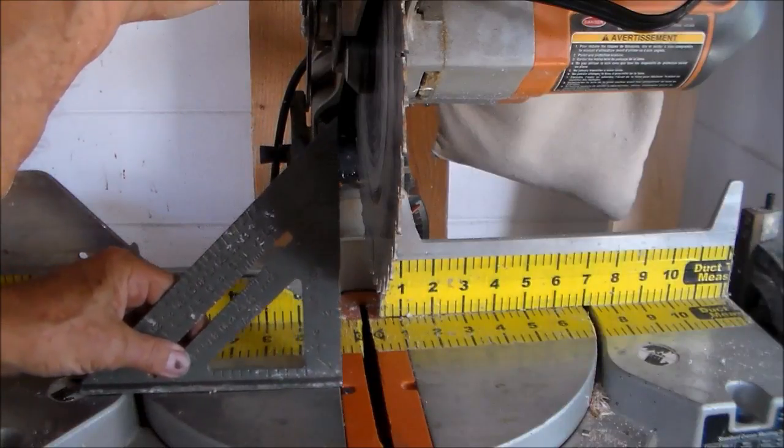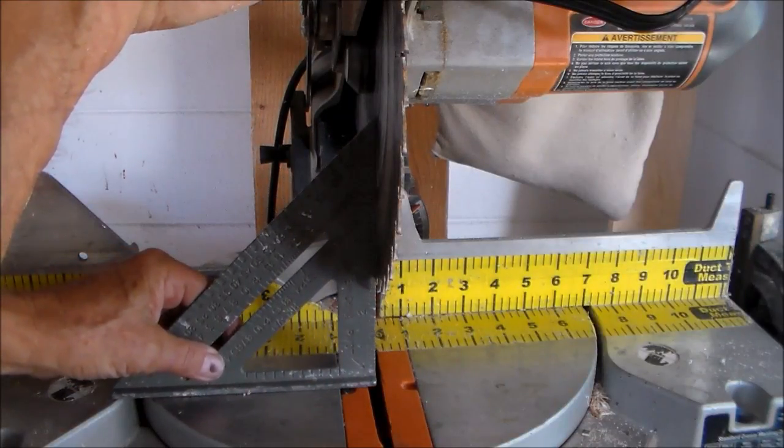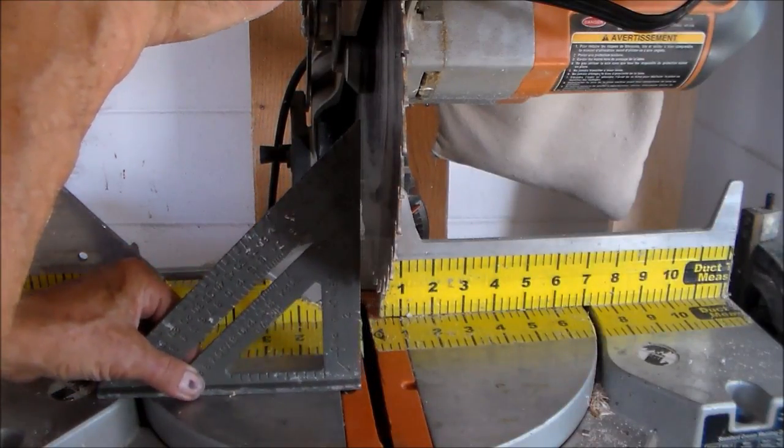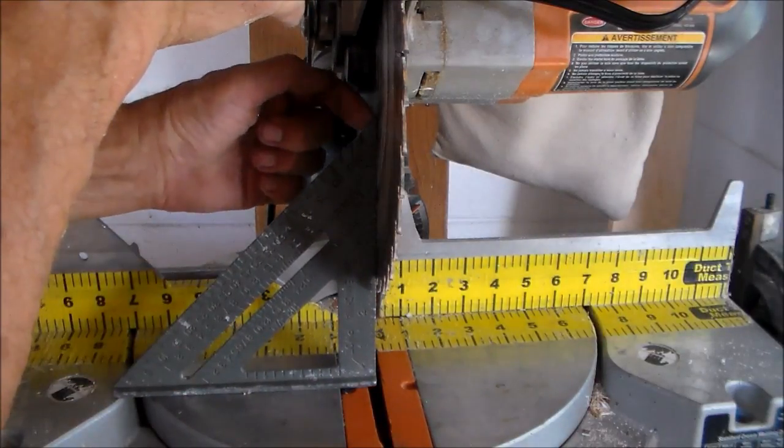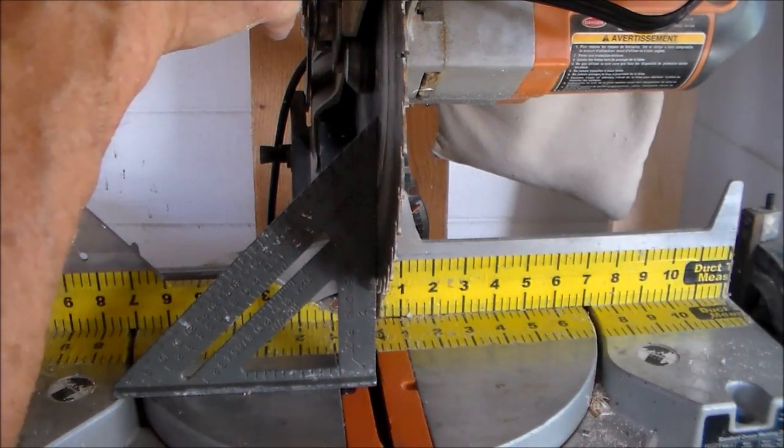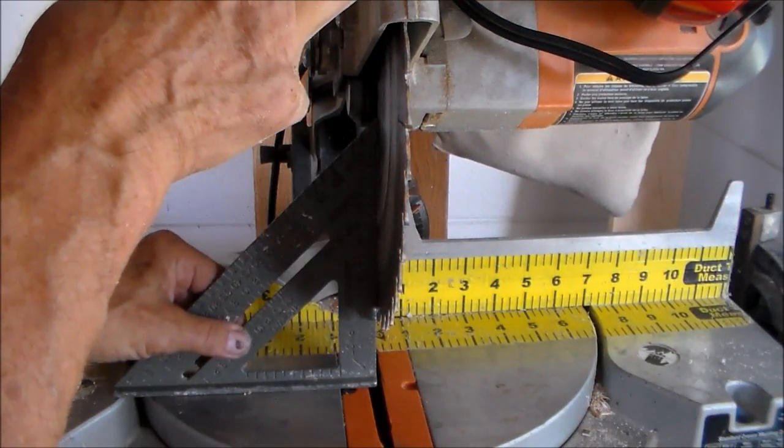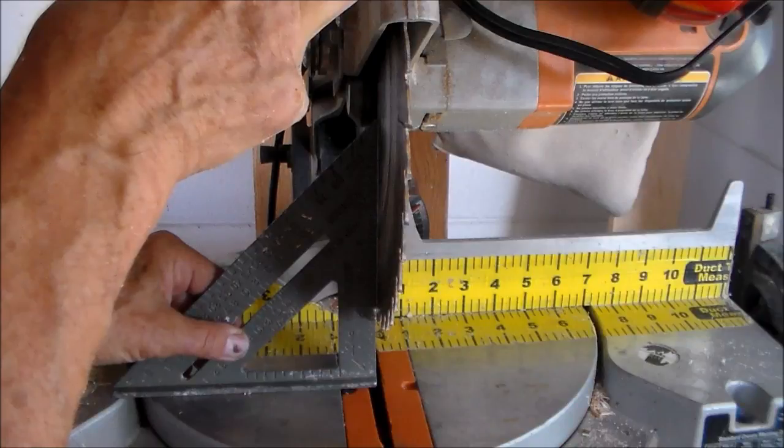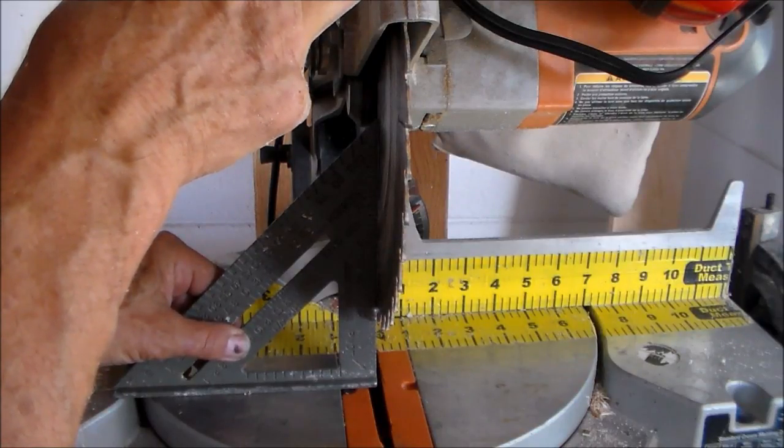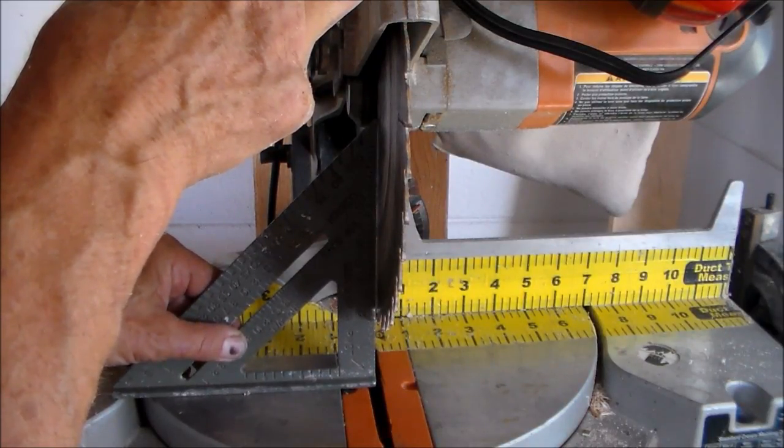Before you make any cuts, make sure that your saw is perfectly square. What I do is when I set my square up, I try to use a long length of the blade and I look for the air gap that's between my square and my blade.